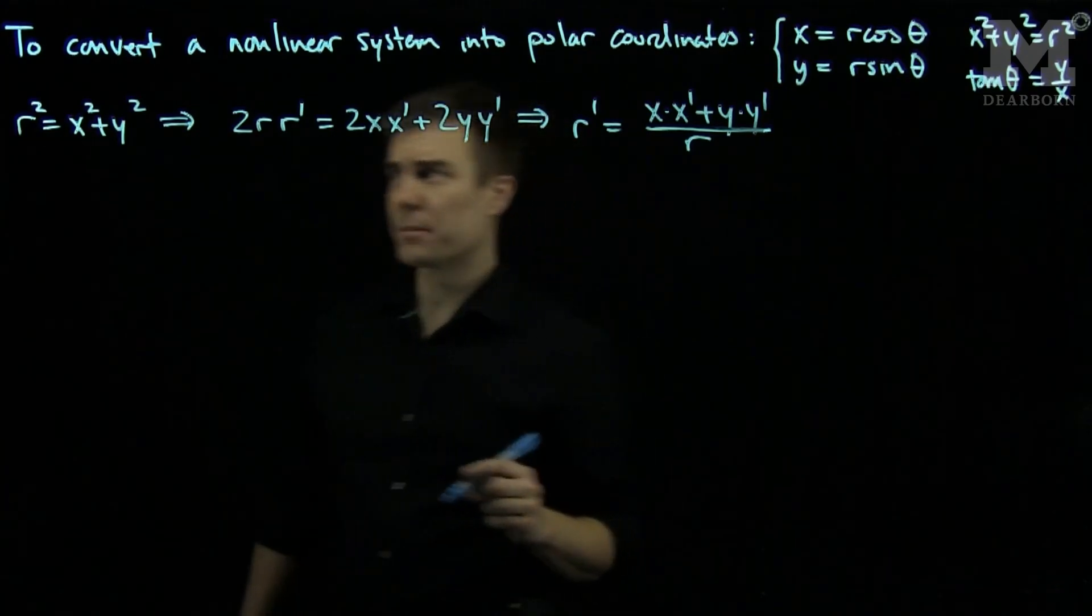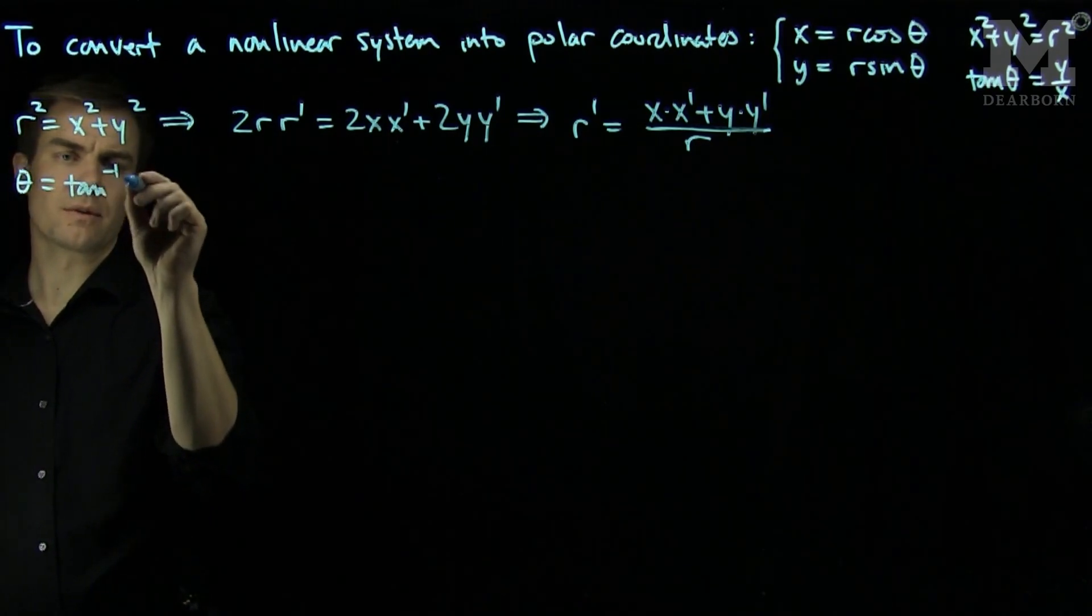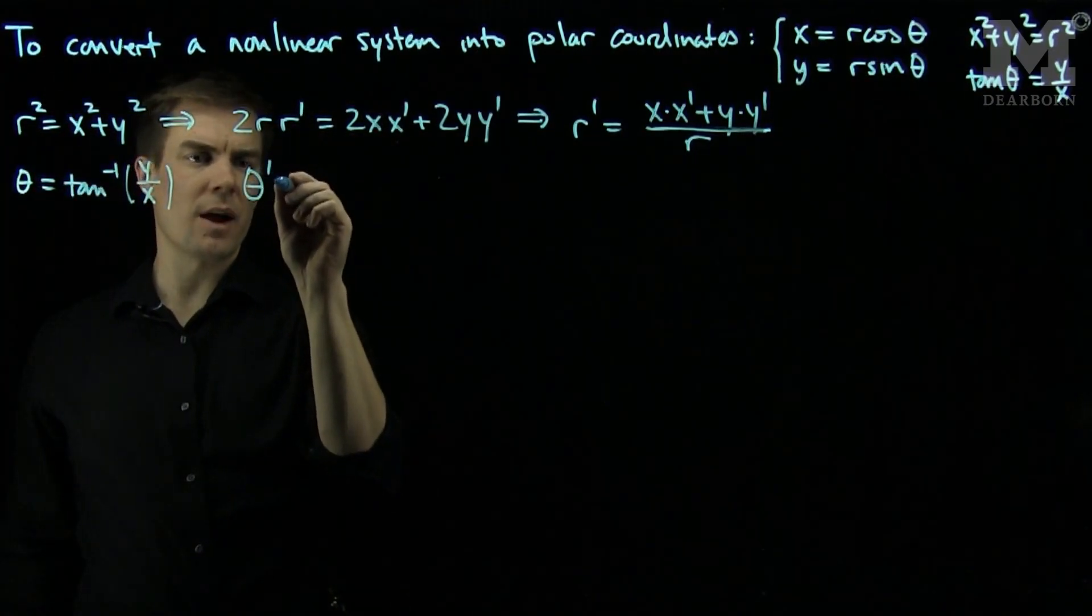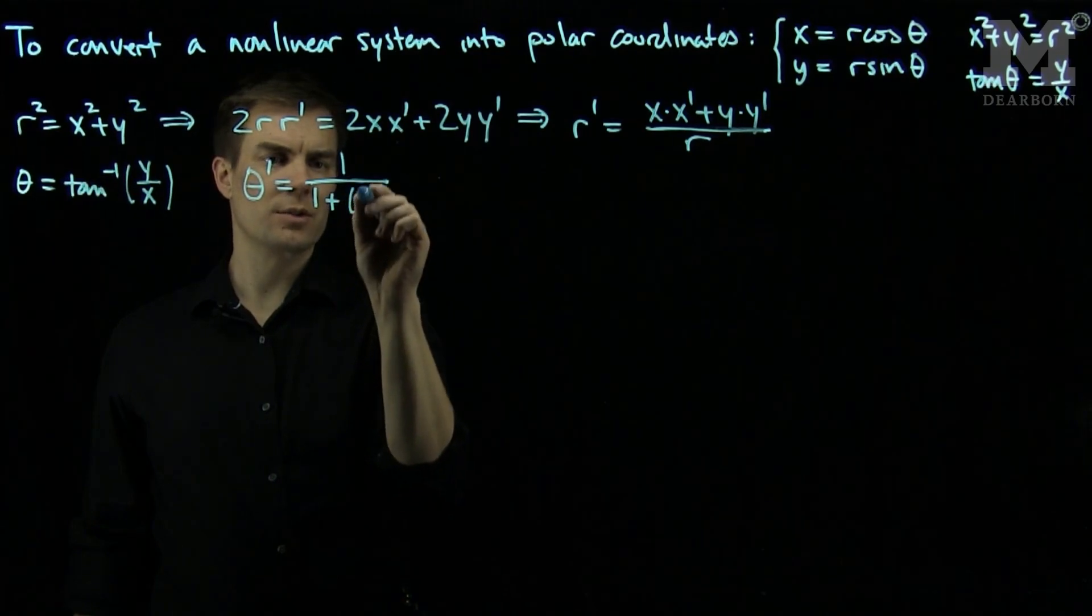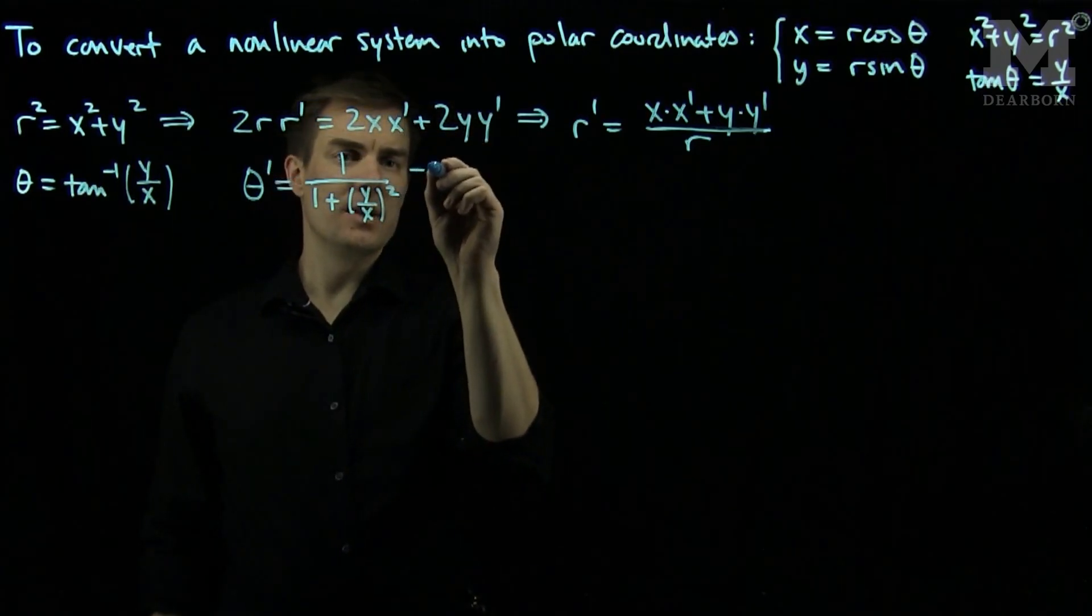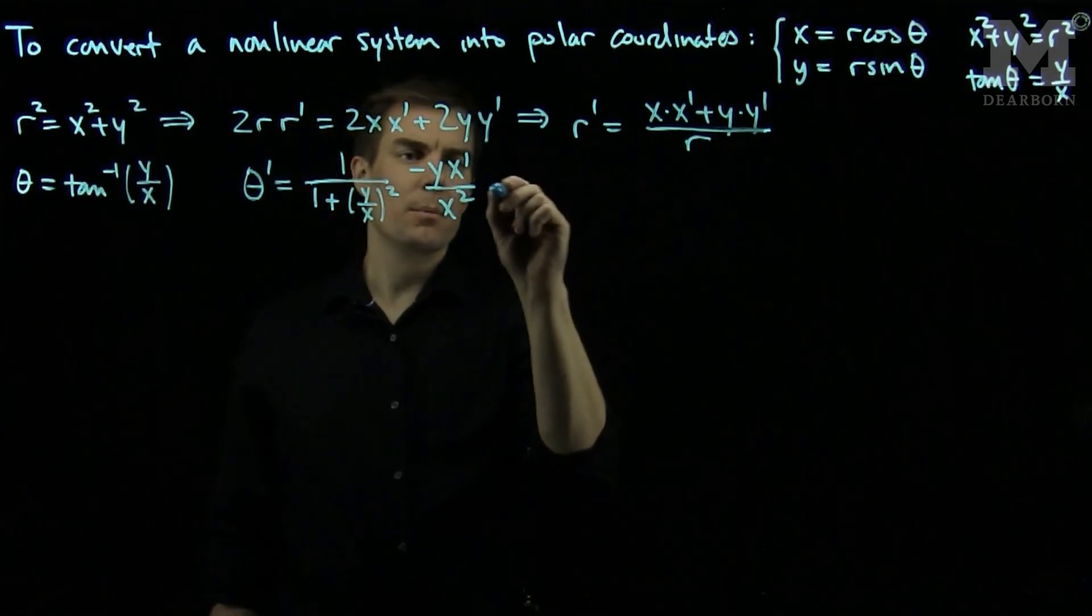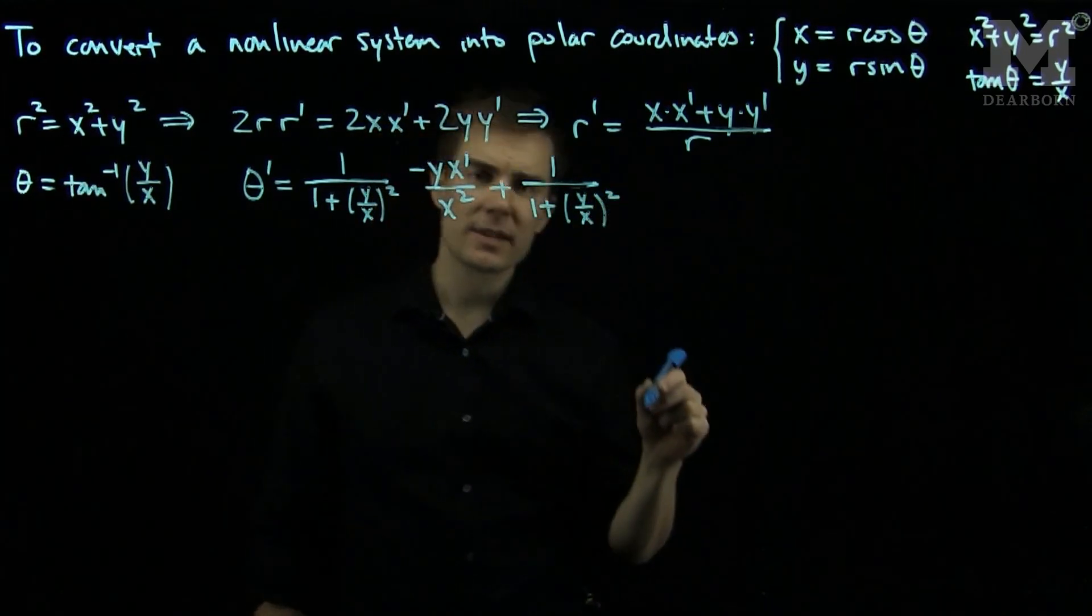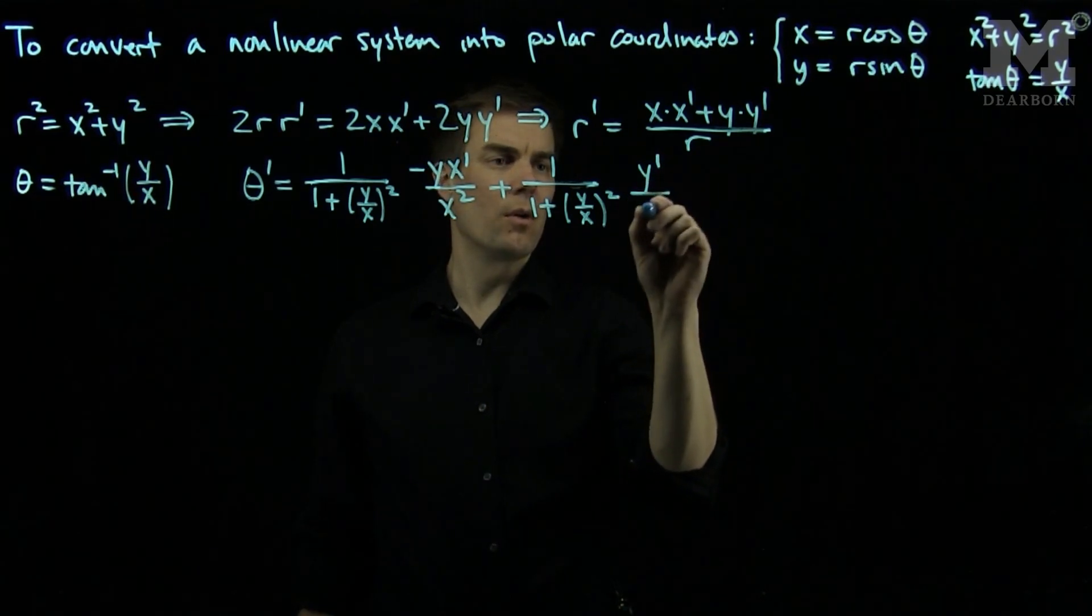We can find a similar relationship for theta. We can use the fact that theta is the tangent inverse of y over x and differentiate this relationship. Theta prime will be the derivative of the inverse tangent, which is 1 over 1 plus y over x squared, times the derivative of y over x with respect to x. That will be negative y times x prime over x squared, plus 1 over 1 plus y over x squared, times the derivative of y over x with respect to y, which is y prime over x.